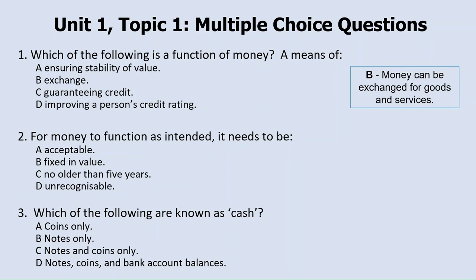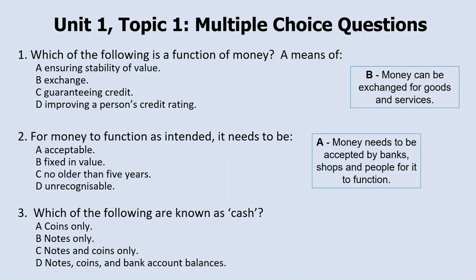Question two: for money to function as intended, it needs to be a) acceptable, b) fixed in value, c) no older than five years, or d) unrecognisable. The answer to question two is a — money needs to be accepted by banks, shops and people for it to function.